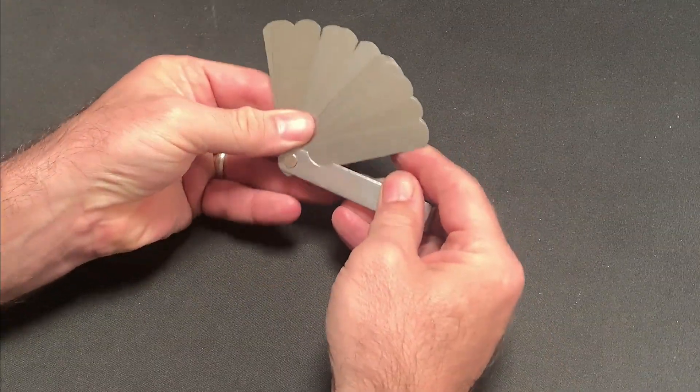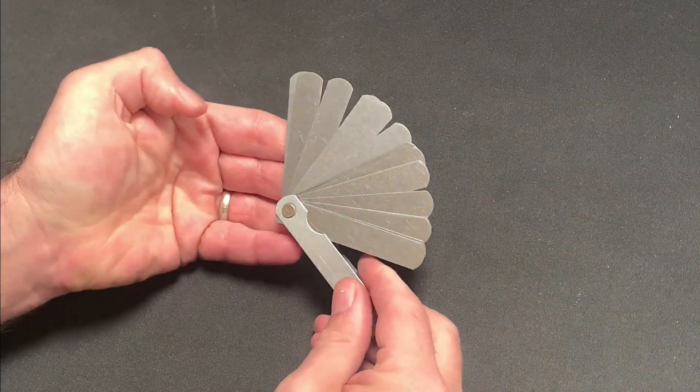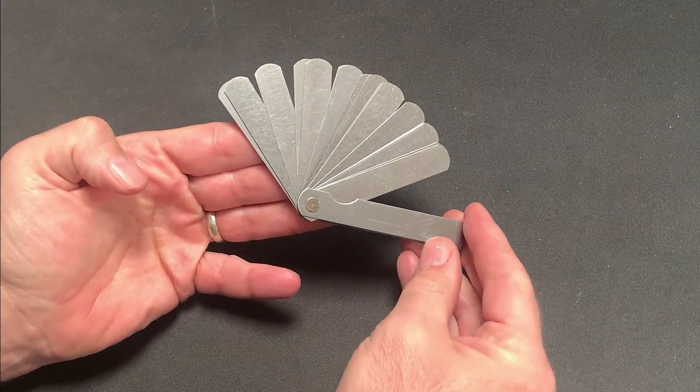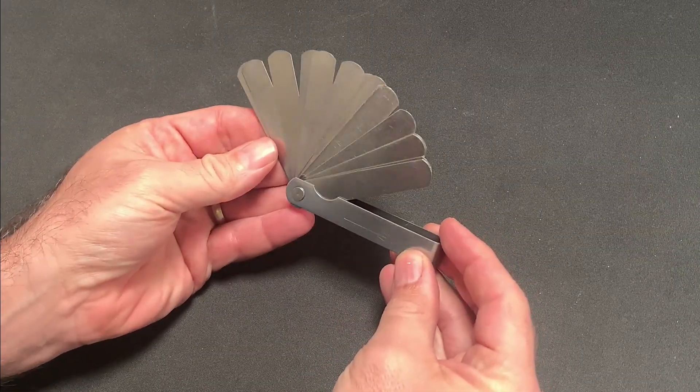I started by getting hold of a set of feeler gauges which formed the blank from which I cut my decoder profiles. Then using the tools which I already own as a starting point I created a template with the following proportions.